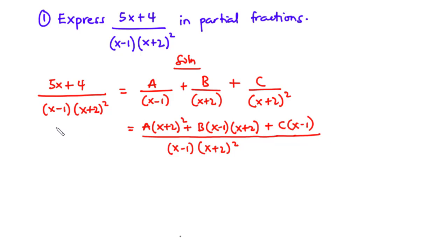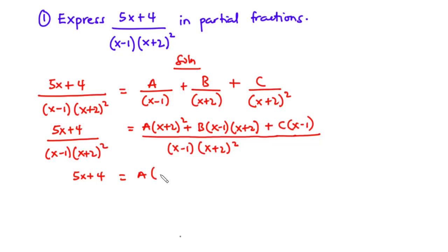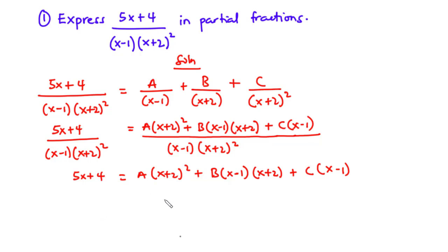This is equal to the rational function 5x plus 4 divided by x minus 1 times x plus 2 all squared. Since the denominator is the same, we compare the numerators: 5x plus 4 equals A times x plus 2 all squared plus B times x minus 1 times x plus 2 plus C times x minus 1. We have x minus 1 appearing, so we put x equals 1 so that B goes to 0 and C goes to 0, allowing us to find the value of A.